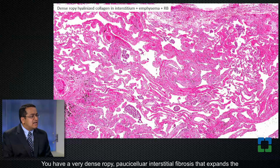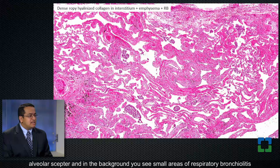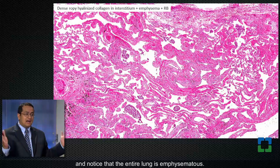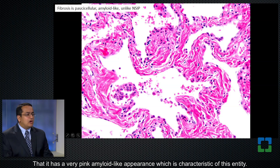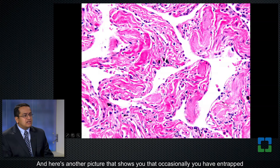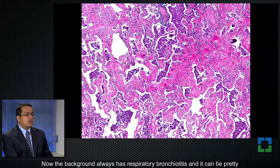Here's what SRIF looks like pathologically. You have a very dense, ropey, paucicellular interstitial fibrosis that expands the alveolar septa, and in the background you see small areas of respiratory bronchiolitis. Notice that the entire lung is emphysematous — so this is not just pure emphysema; it's emphysema with a particular kind of fibrosis. At high magnification, the fibrosis has a very pink, amyloid-like appearance which is characteristic of this entity, and occasionally you see entrapped smooth muscle bundles mixed with this kind of fibrosis.